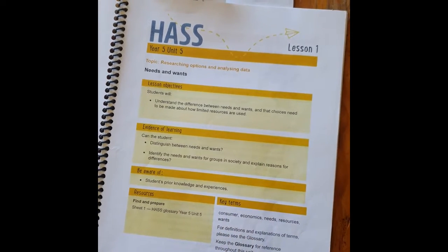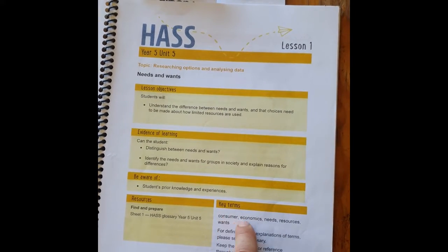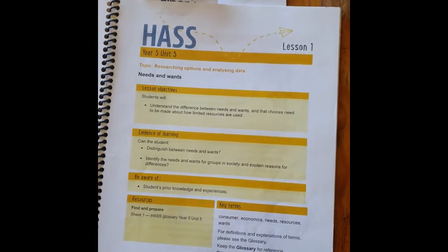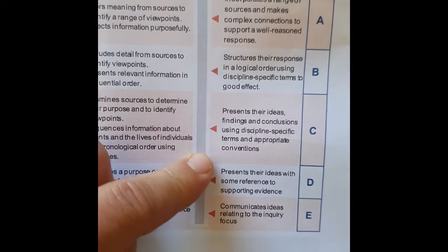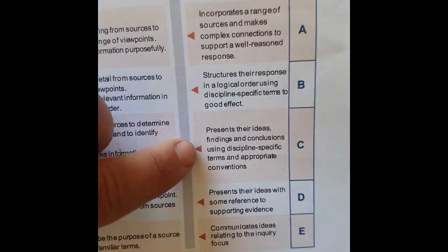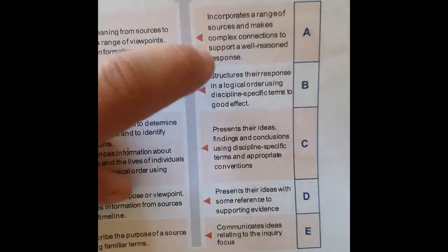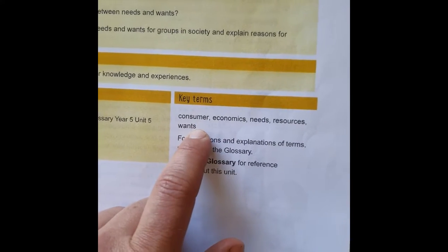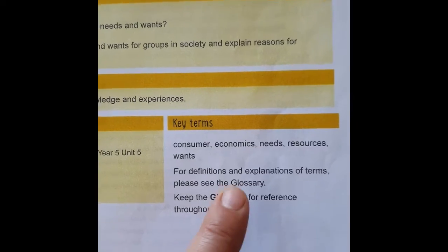It's really important to go through these terms with your students, because the use of these terms usually helps them on their assessment task. If we look at a GTMJ from an assessment task, we can see that at the C, B, and A level, students are expected to use discipline-specific terms. So to get your kids up to that level, you really need to be teaching them those discipline-specific terms. These key terms are really important. If you need the definitions, the glossary is where to go.